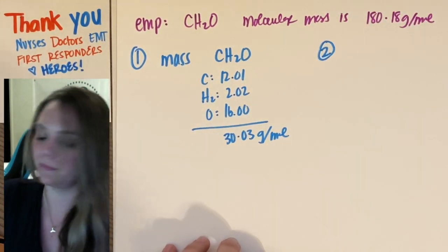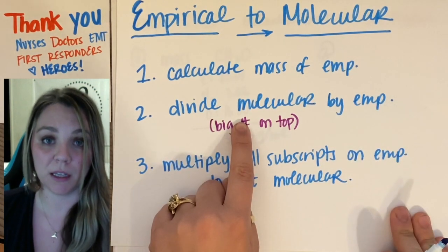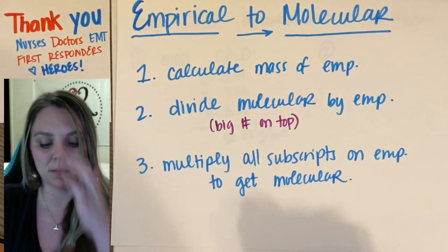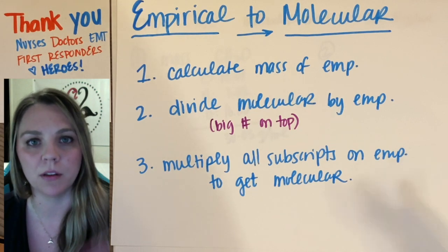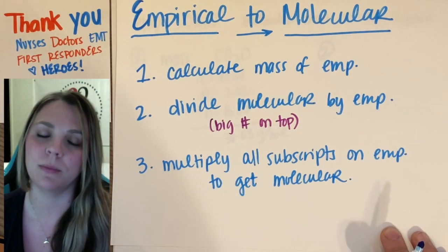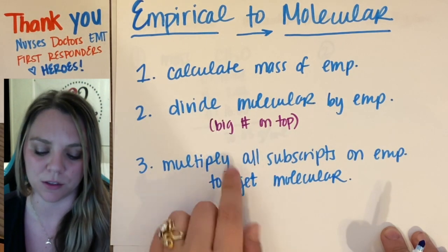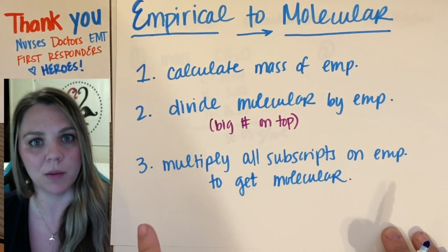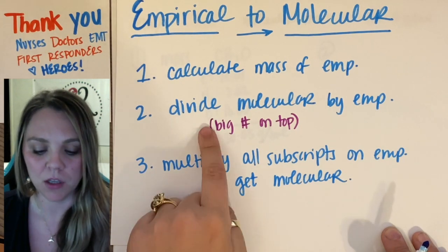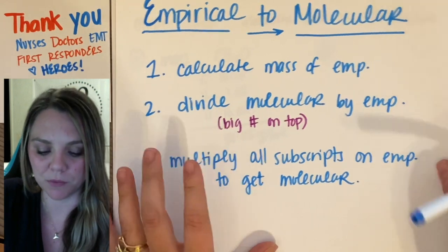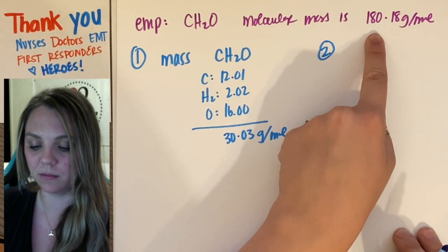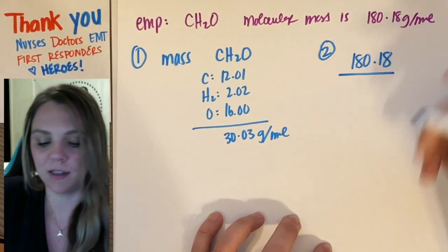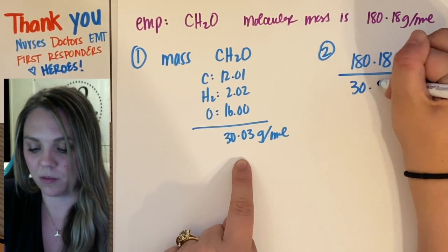Then step number two: divide your molecular mass by your empirical mass. If it's confusing which one to put on top or bottom, put the big number on top. You want a whole number, so you don't want to put the small number on top and divide by the big number — you'll get some kind of decimal. They have to give you the molecular mass in the problem, so we're going to take 180.18 divided by the number I just solved for, 30.03.